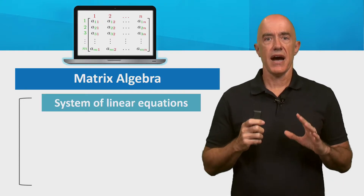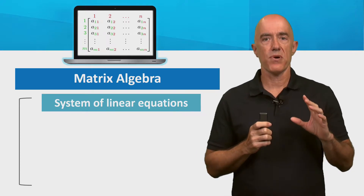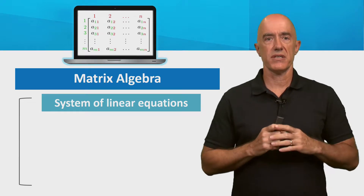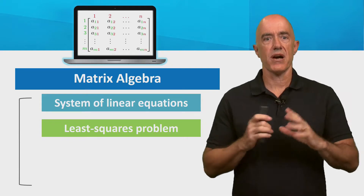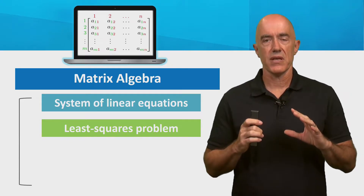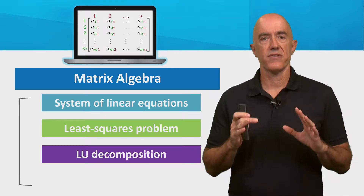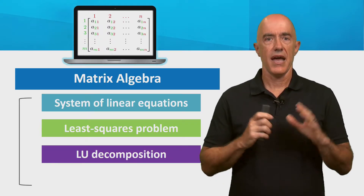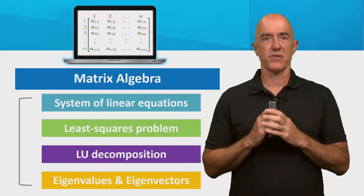First, I'll show you how to solve a system of linear equations where we have both n equations and n unknowns, and the solution is unique. Second, I'll show you how to solve the least squares problem where there are more equations than unknowns and there's no exact solution. Third, I'll show you how to find the LU decomposition of a matrix. And fourth, I'll show you how to find eigenvalues and eigenvectors.